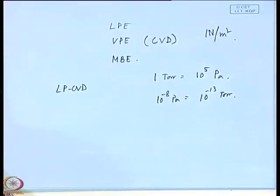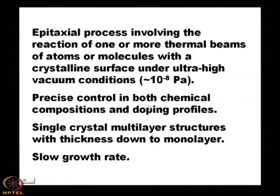In CVD the growth rate is comparatively faster — 1 micron per hour or even 10 microns per hour in some cases. In MBE it is a very slow process because of the ultra-high vacuum condition. However, you can precisely control the chemical compositions and doping profiles.